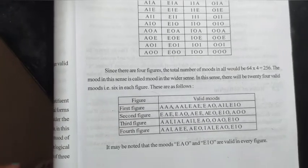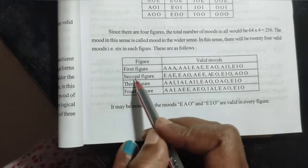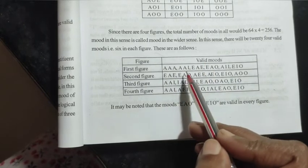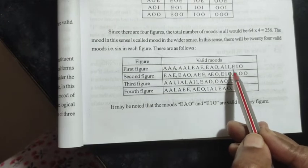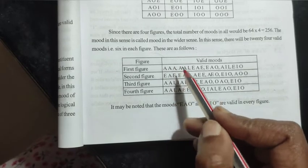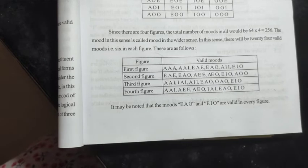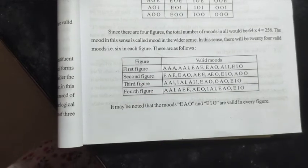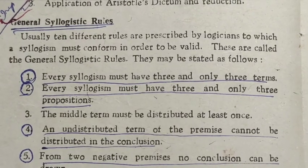There are four figures of syllogism: first figure, second figure, third figure, and fourth figure. The valid modes include AAA, AAI, EAE, EAO, AII, EIO for the different figures. These are the valid modes across the four figures of syllogism.